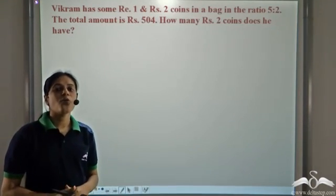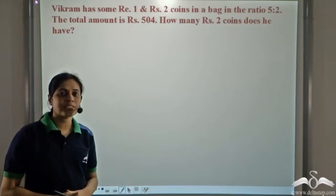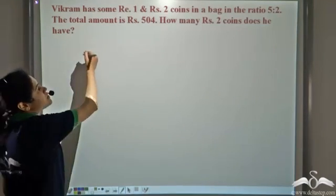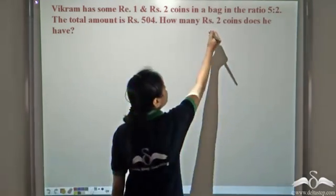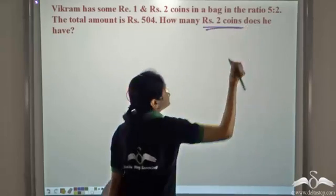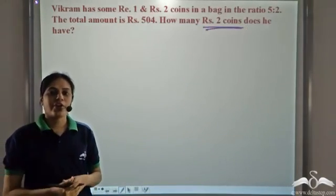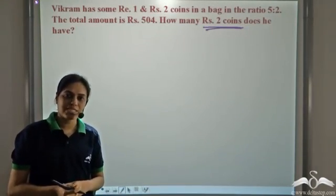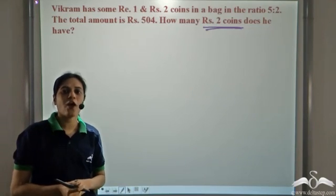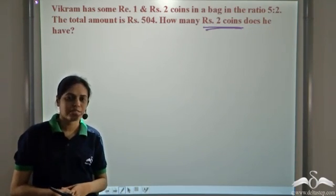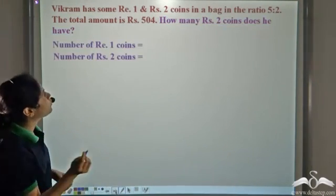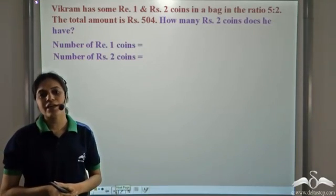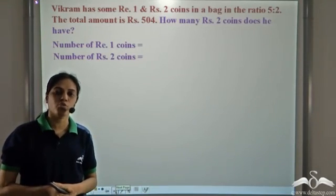So what are the unknowns in this case? The unknowns are the number of coins. Vikram doesn't know how many Rupee 1 coins he has and how many Rupee 2 coins he has. So the unknown is the number of Rupee 1 coins and the number of Rupee 2 coins.